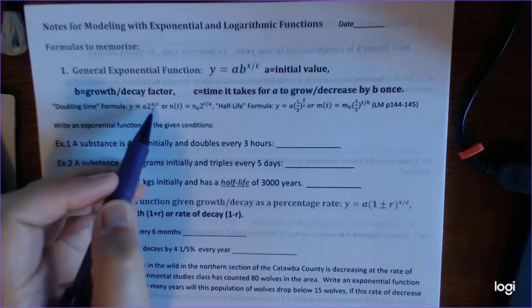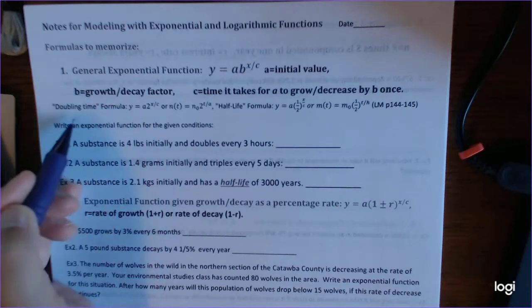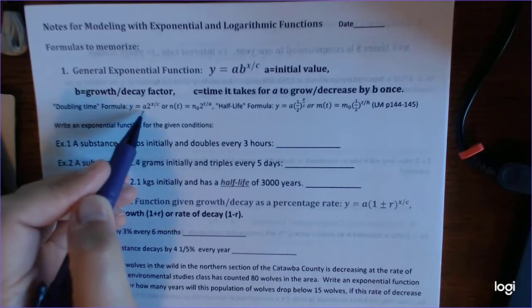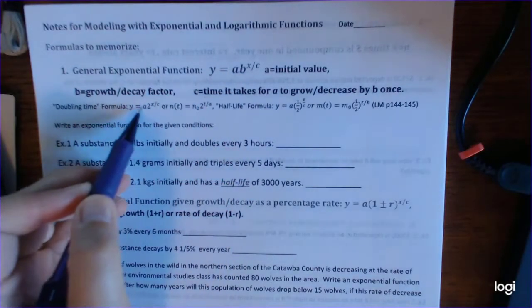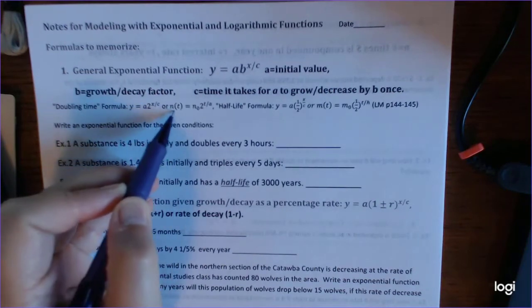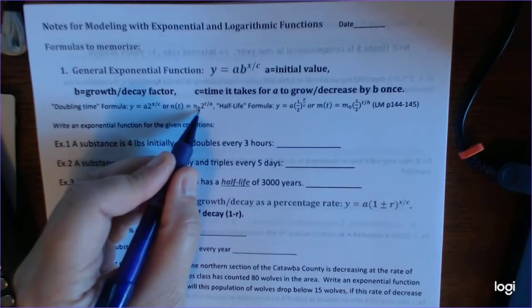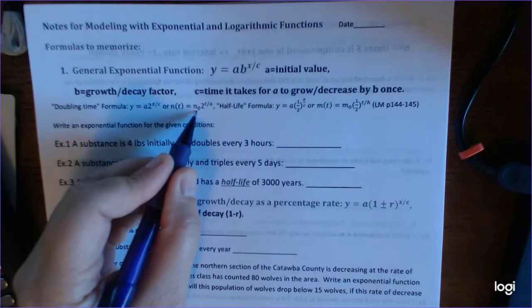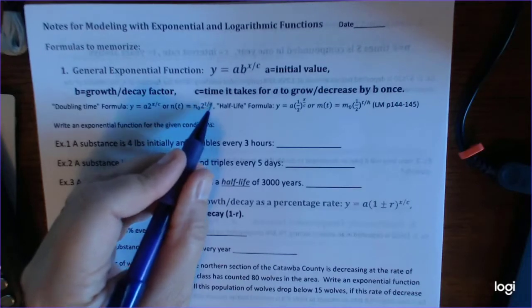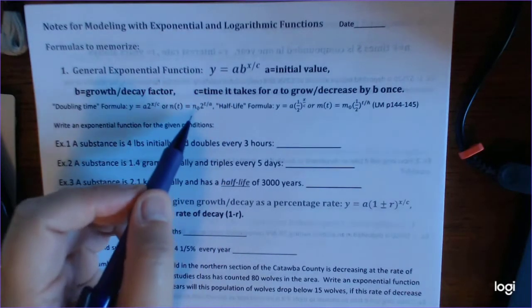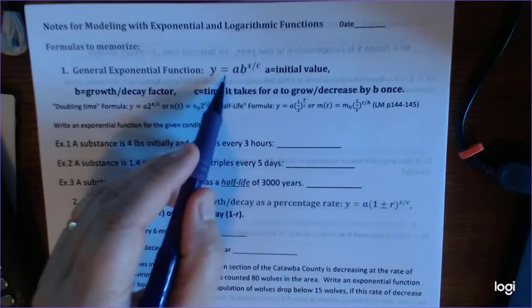A lot of the formulas that you might see in the lab manual even might look like different formulas, but they're really the same thing. So the doubling time formula is Y equals A times 2 to the X over C. That's just because we're telling you that it doubles, so the growth factor would be 2. And then you might have some function notation, N of T equals N sub 0. That subscript 0 means this is the initial value. Times 2 to the T for time over A, which is still the time it takes for us to be able to use that doubling factor once. So the letters may change, but this formula isn't changing.